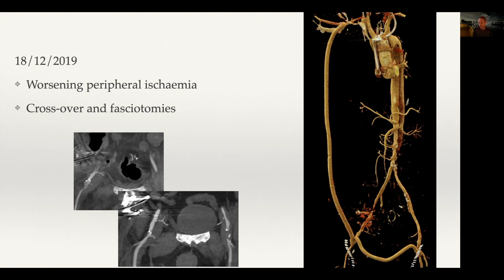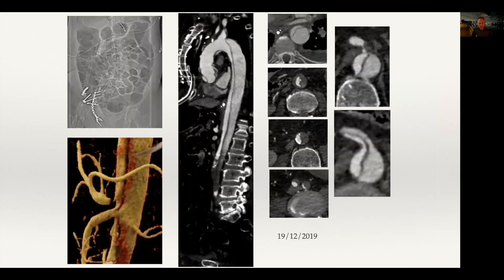At this point, stenting the aortic dissection is considered, but there's a significant controversy: stenting into a dissected aorta is not something you want to do lightly. The dissection now extends from the distal anastomotic suture line in the ascending aorta distally, so stenting means stenting into dissected aorta — essentially a contraindication. The major concern is that too large a stent could over-pressurize the false lumen. In a patient with ongoing peripheral ischemia post-fasciotomies, however, you have to consider it.